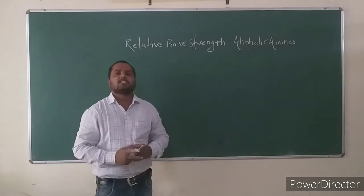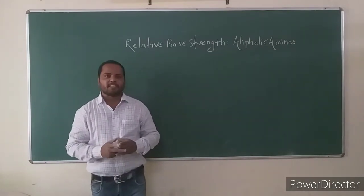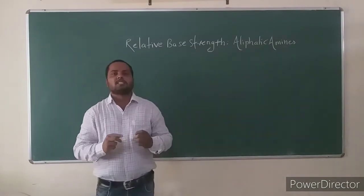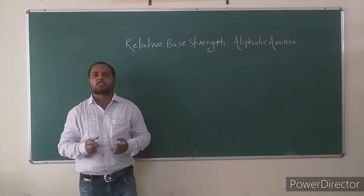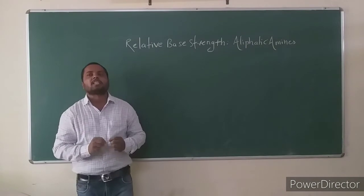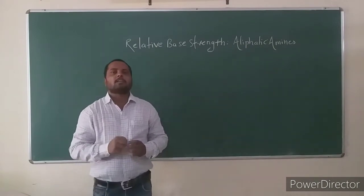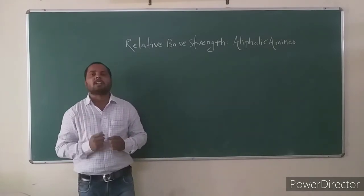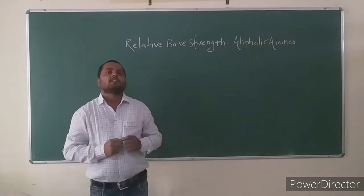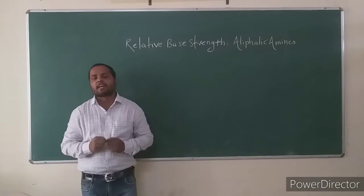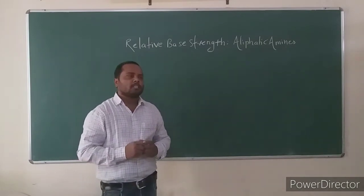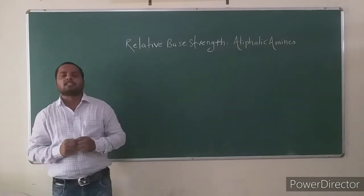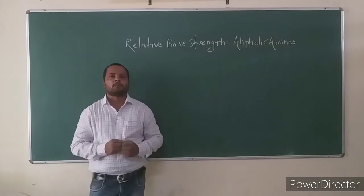Hello students. In the last lecture we discussed the five factors affecting base strength: the availability of lone pair electrons, the electronegativity of atom B, the structural effect in B, the stability of the conjugate acid, and the nature of the solvent. These are the five factors useful to decide the base strength for different types of organic compounds.